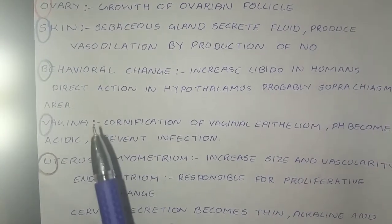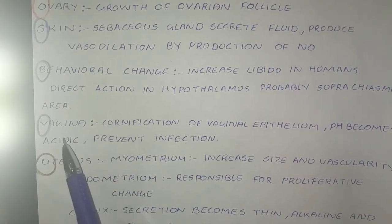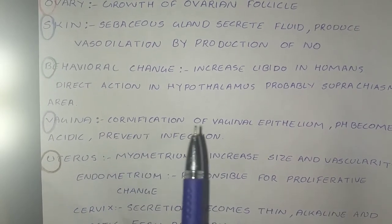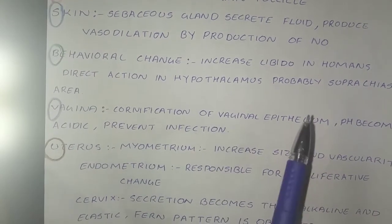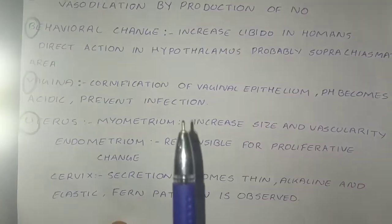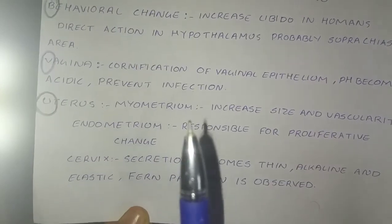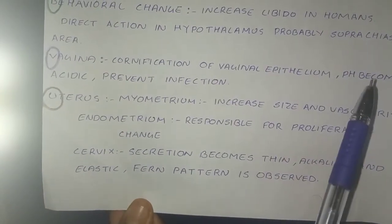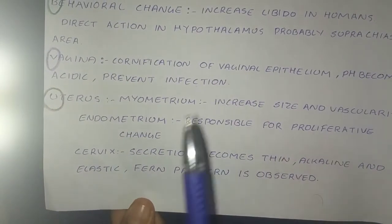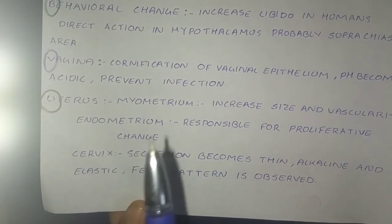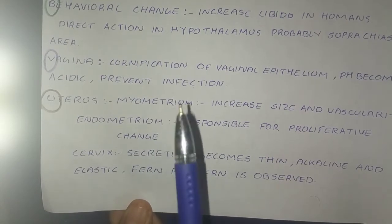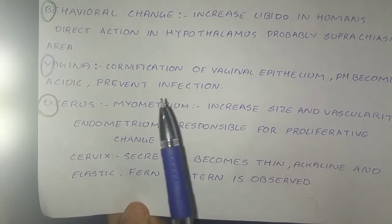V stands for vagina. Cornification of the vaginal epithelium occurs due to the presence of estrogen, and the pH becomes acidic. This acidic nature helps prevent infection.